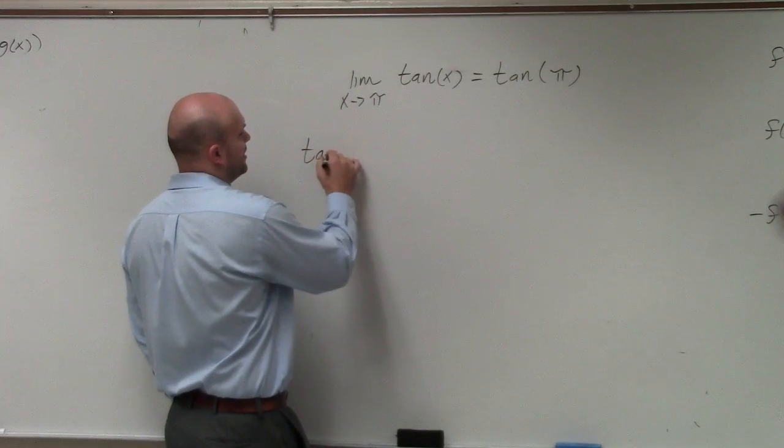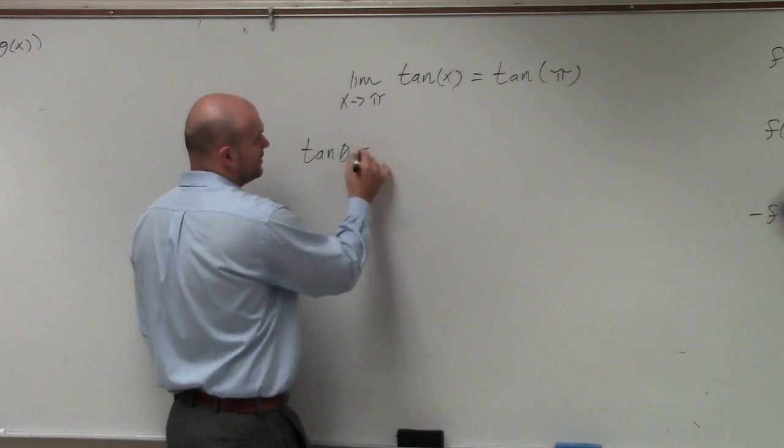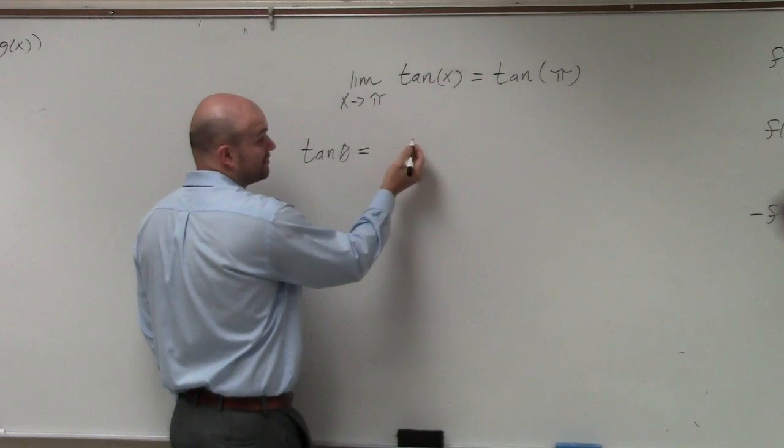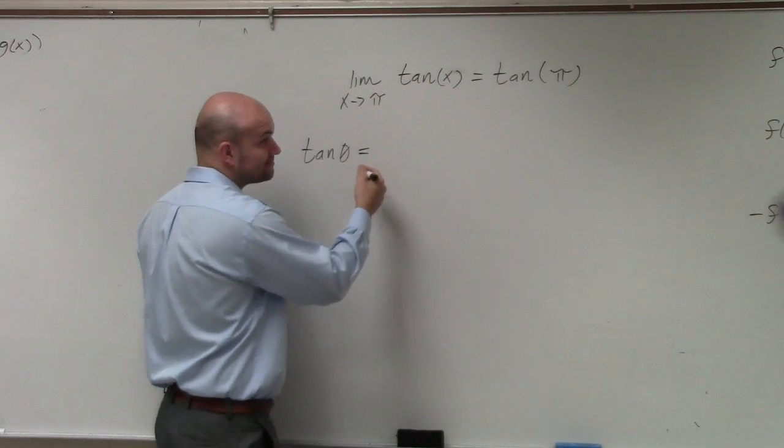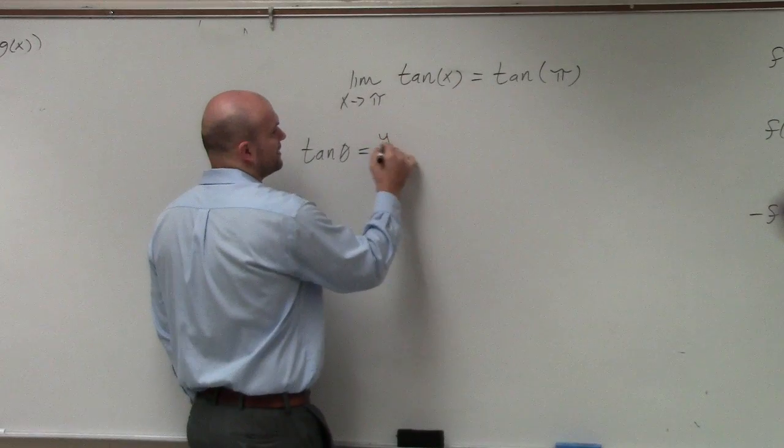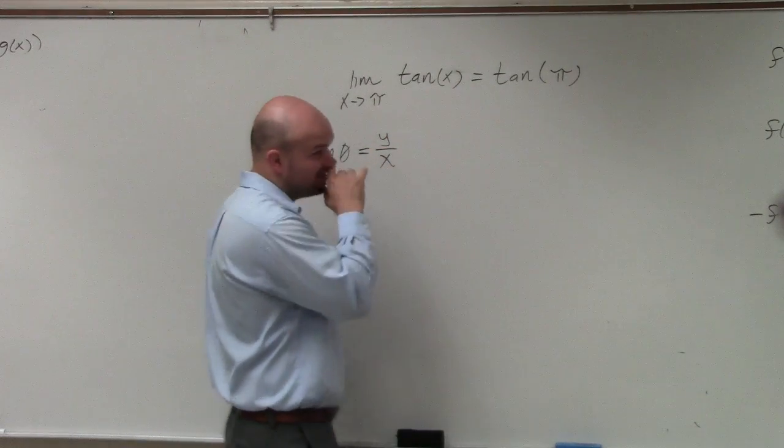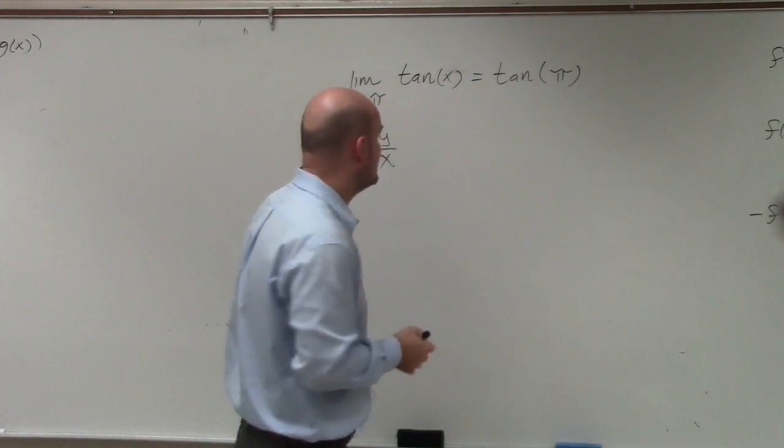Remember that the tangent of any angle is basically equal, and when looking at a triangle, it's opposite over adjacent. But when we're looking on the unit circle for coordinate points, it's going to be the y-coordinate over the x-coordinate.